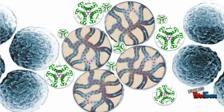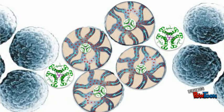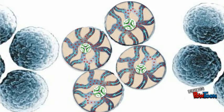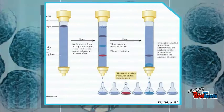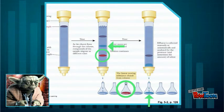Larger molecules pass around the beads, while smaller molecules travel through them. In this process, larger molecules exit the gel first, while smaller molecules travel through the network of tunnels, lengthening their transition through the column. Each filtered solution is collected in stages, or fractions, and each fraction contains progressively smaller molecules.